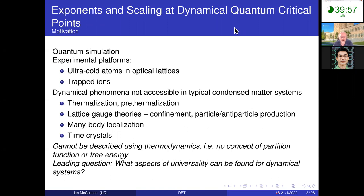The main examples here would be ultra-cold atomic gases, specifically in optical lattices — those are the interesting cases for me — and also trapped ions. These give rise to dynamical phenomena that you can't typically access in condensed matter systems, partly because we don't have enough control and also the time scales tend to be too fast in condensed matter to observe much.